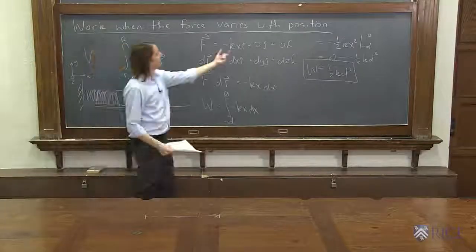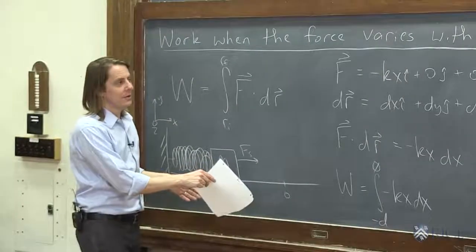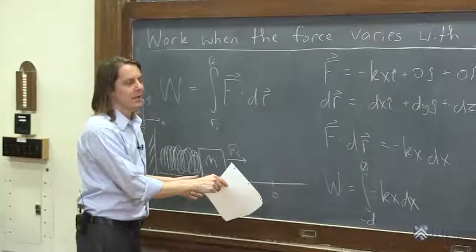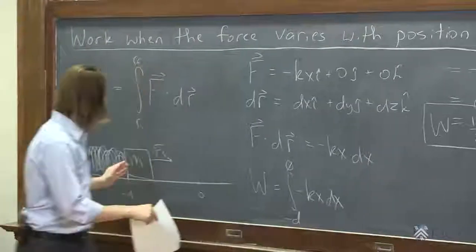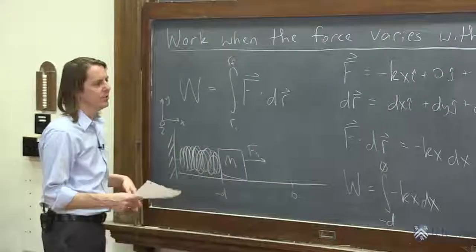So notice, it's not just the force KX times the displacement D. That would be KDD or something, KD squared. The half shows up because it's an integral. Because the force was big, but then as you add it up, the force is less and less. The work it's doing is less and less. So the half shows up.